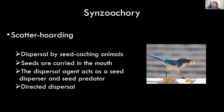Then we have synzoochory, which is dispersal by a seed-caching animal that scatter hoards the seeds. I've included a picture because I have a scrub jay that definitely puts peanuts in my pots — I found a peanut inside my Christmas wreath on my front door, which cracked me up. If you put out any food, you'll notice the scrub jays will take it, fly off, and then come back. They are very prolific seed dispersers and can directly disperse seeds to specific microsites.